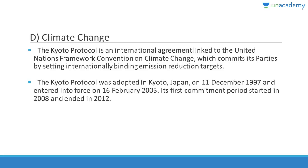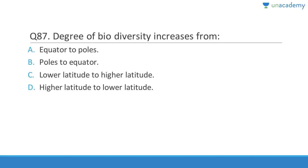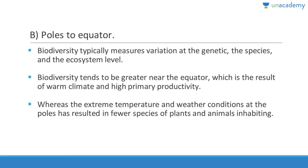Question 86: The Kyoto Protocol is concerned with climate change. It is an international agreement linked to the UNFCCC which commits its parties by setting international binding emissions reductions. Question 87: Degree of biodiversity increases from poles to equator — it will always increase towards the equator, which has the highest maximum biodiversity because of tropical rainforest, abundant sunlight, and abundant water.